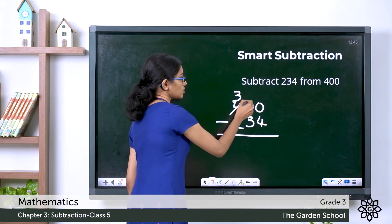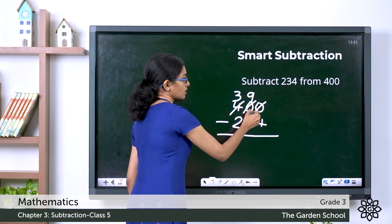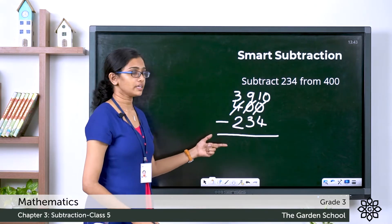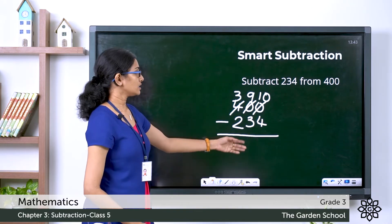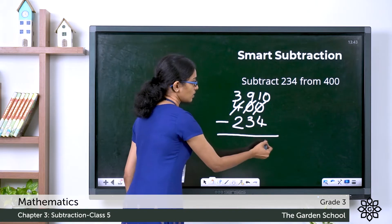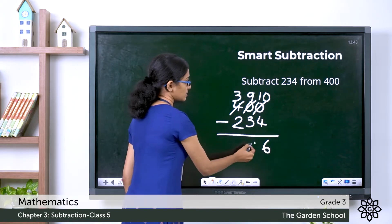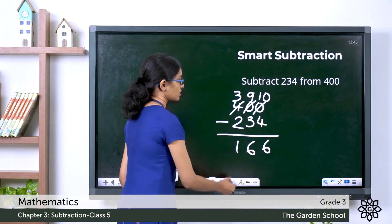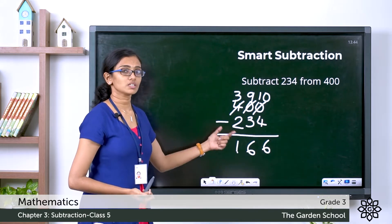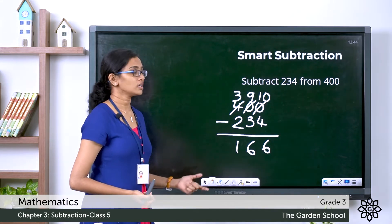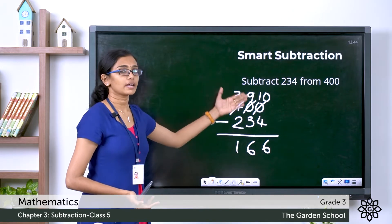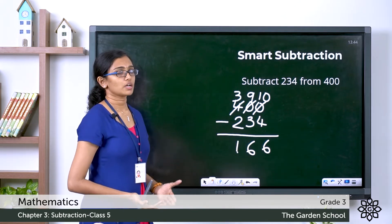We regroup like this, and then do the subtraction: 10 minus 4 is 6, 9 minus 3 is 6, and 3 minus 2 is 1. This is usually how we do the subtraction, and it takes a little bit of time to actually regroup and then subtract.